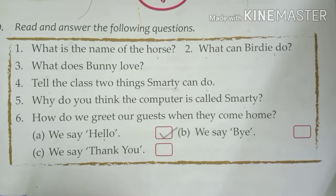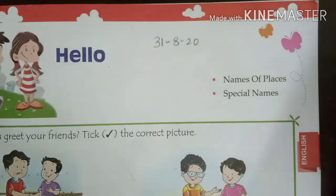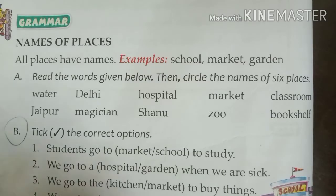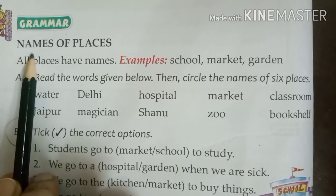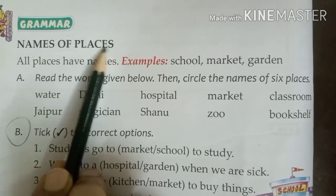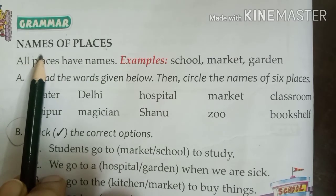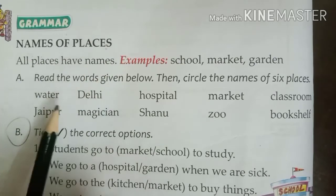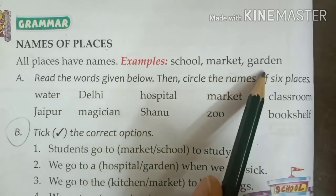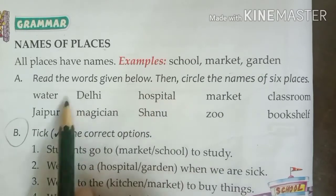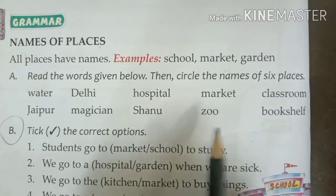In this way, you will read lesson number 4, page 7. Now turn to the next page — we have grammar. Earlier we learned naming words or nouns. Here we will be learning names of places. Nouns are names of persons, places, animals, and things. Today we will learn a few names of places — like school, market, garden. We have to read these words and circle the names of six places.